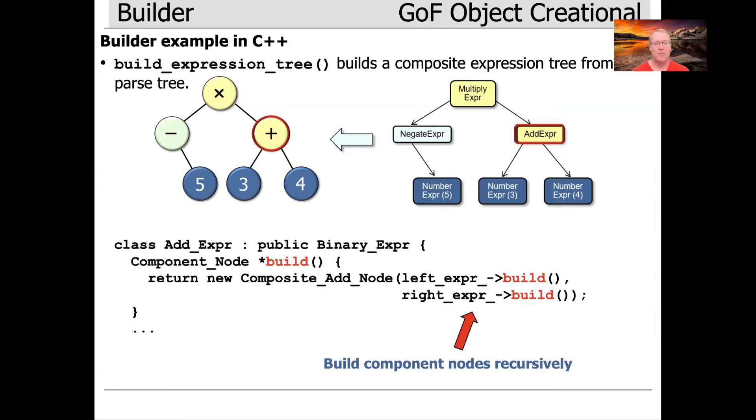That's the add expert. And you can see what happens here is that this is an add expert node, which also inherits from binary expert. However, it's got a build hook method and this build hook method creates a composite add node and the elements that are passed into the constructor of composite add node,